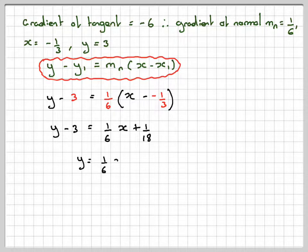Adding 3 to both sides, we're going to get that y is 1 sixth of x, and then we get 3 and 1 over 18, which is an improper fraction of 55 over 18. So it's now in the format y equals mx plus c, as required.